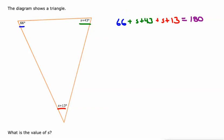All right, so let's start off by combining like terms. s plus s is 2s. We'll do 66 plus 43 plus 13, which is 122. Then we can subtract 122 from both sides, which is 58, and then divide both sides by 2, and we get 29 degrees.